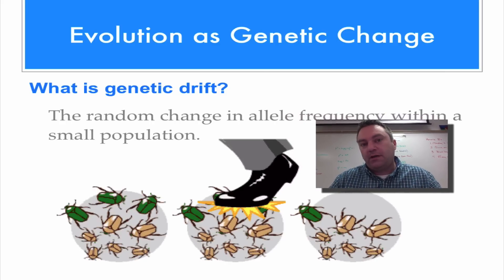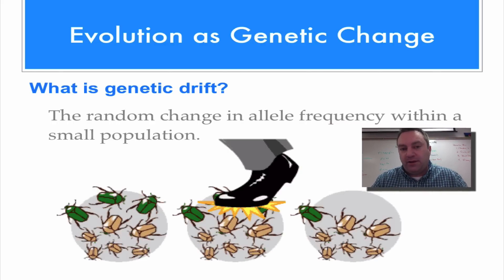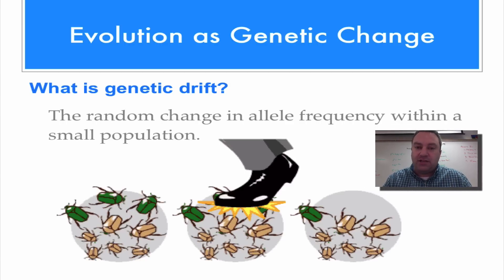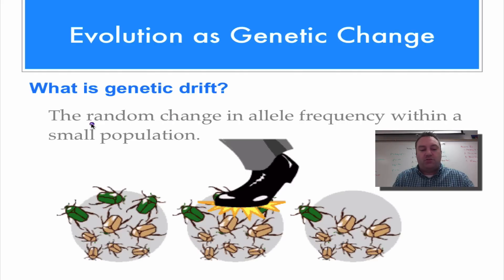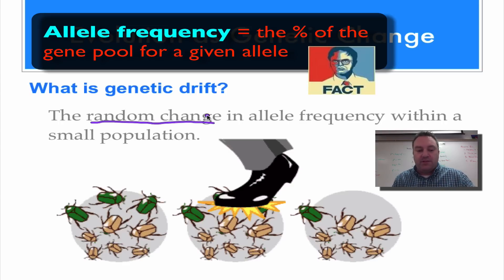Because the gene pool is small, there can be some random events that affect allele frequency, and of course any change in allele frequency is called evolution. The first concept we want to talk about is genetic drift. Genetic drift is just a random change in allele frequency — it has nothing to do with natural selection. We have a perfect example in this picture right here.